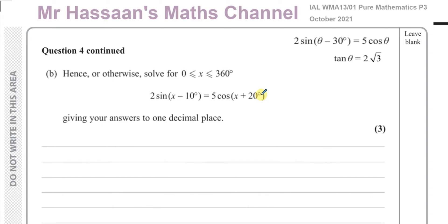So now what we're going to do here is we're going to see the similarity between these two things. This is from part A: 2sin(θ - 30°) = 5cosθ. This is kind of like the same thing except you can say x + 20 is the same as our θ. And you can see that this angle is 20 less than that angle, and this angle is 30 less than that angle.